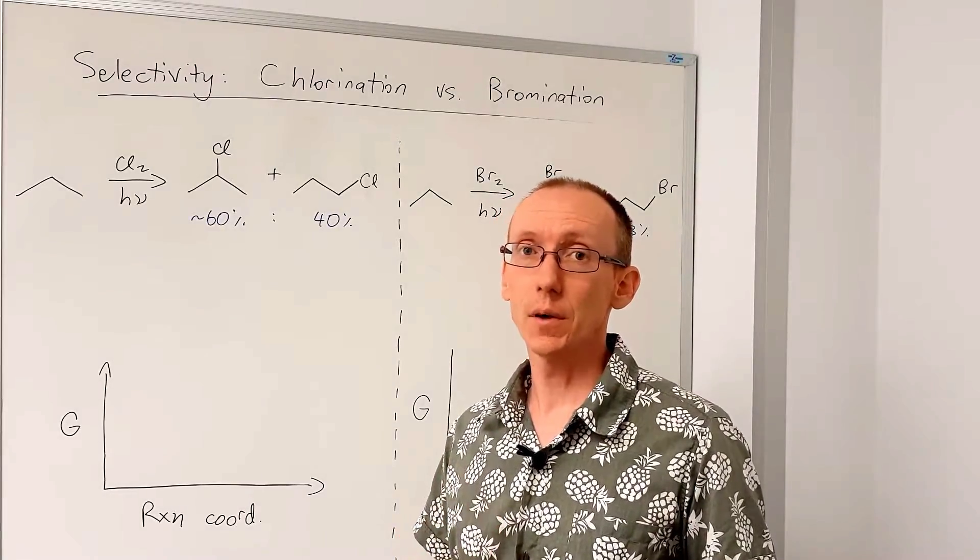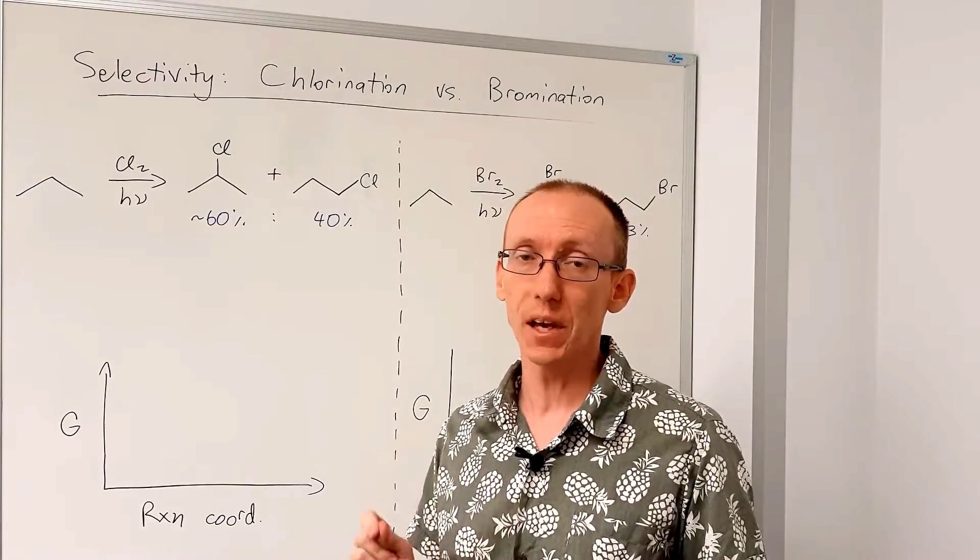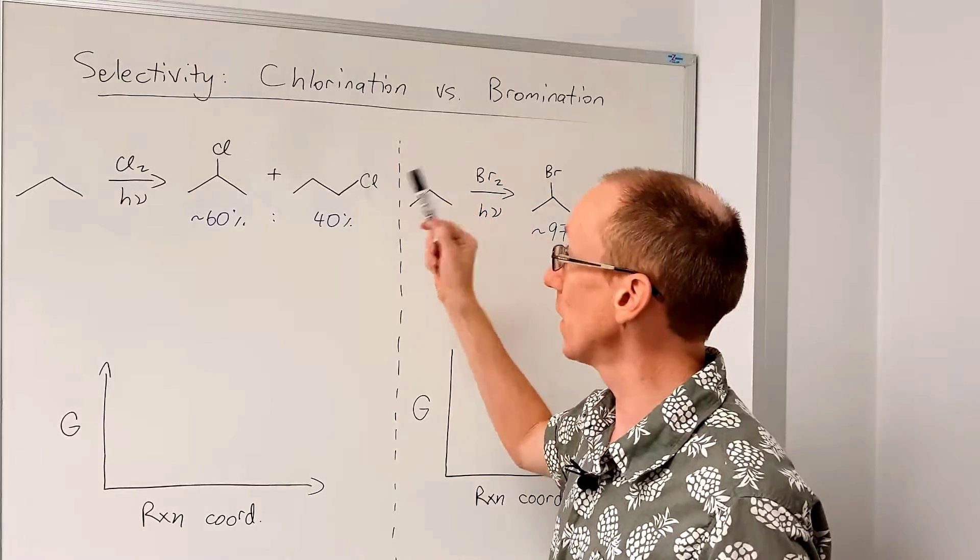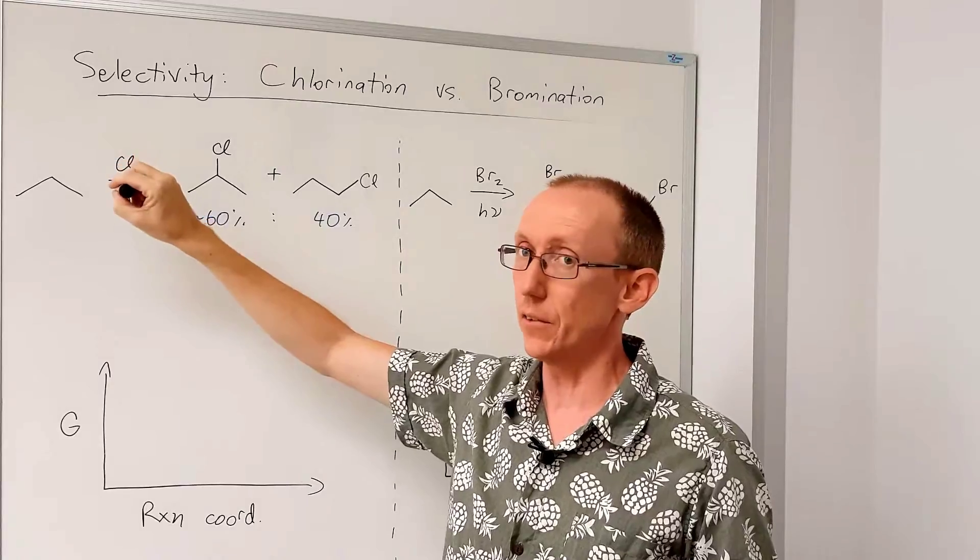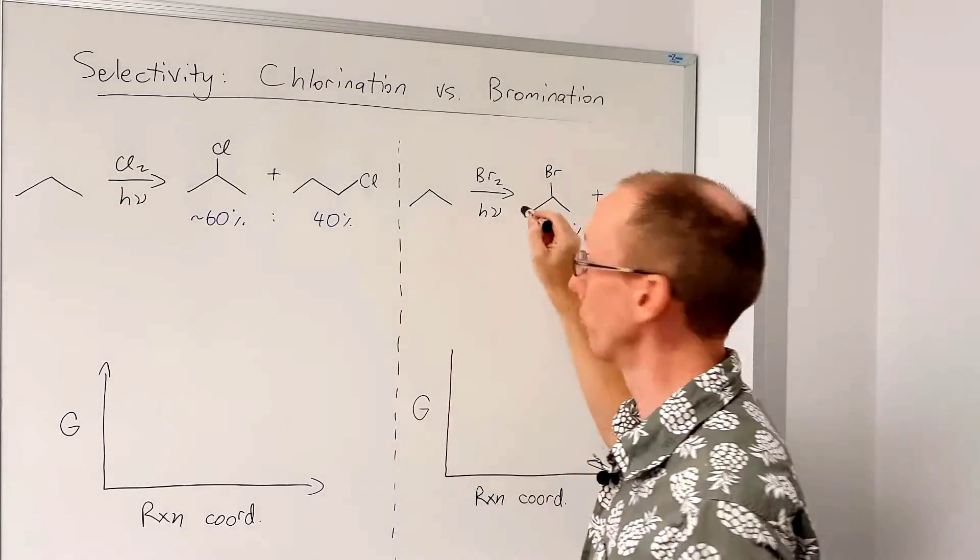This video is about the radical chlorination versus the radical bromination of alkanes and the curious observation that chlorination of an alkane, if there's selectivity possible, is normally much less selective than bromination.